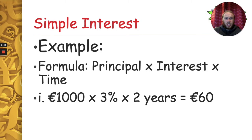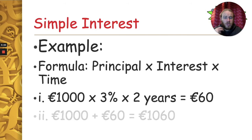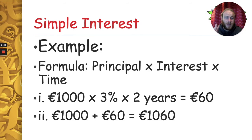Now, how much does John get back in total after the two years then? Well, we just have to add that onto the amount he saved in the first place. So if he withdraws money from the bank account in two years' time, he will have a thousand sixty euro in his account.